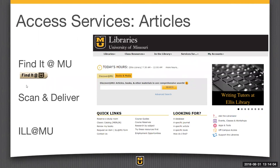Scan and Deliver is also a service similar to book chapters. If you want an article in our library, we will scan it for you. This is a relatively new service — we used to say that if the journal is in our library, you've got to get it yourself. But we have changed that policy. Now we will scan an article for you, even if it's in Ellis Library. You simply fill out the interlibrary loan form and we will scan it and get it to you, sometimes in as little as 24 to 48 hours.